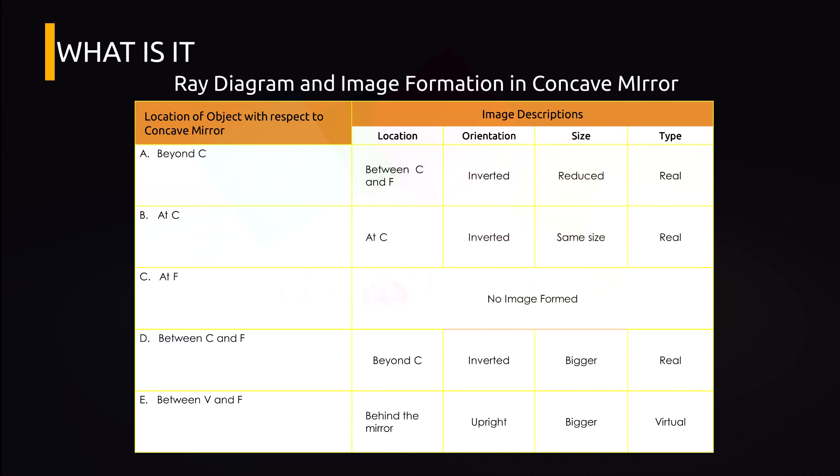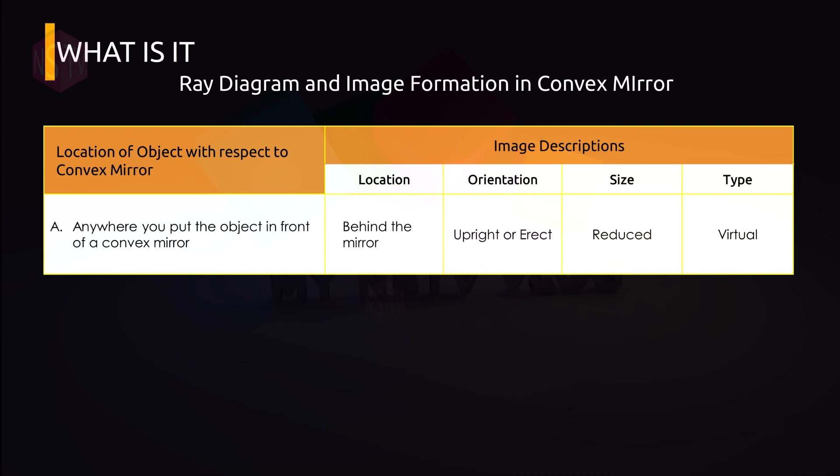So now, let's proceed with the convex mirror. So please refer to the table on page 12 of your module. So anywhere you put the object in front of a convex mirror, the image location is always behind the mirror, it is always upright, smaller than the object, and always virtual.